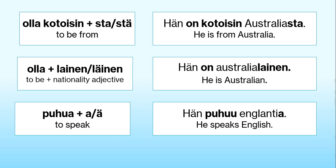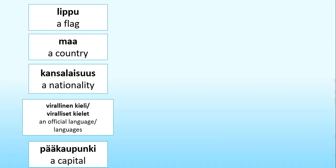Next, let's take a look at some keywords that you will need to follow in this video. A flag in Finnish is lippu. A country is maa. A nationality is kansalaisuus. An official language is virallinen kieli. Official languages is viralliset kielet. A capital is pääkaupunki.